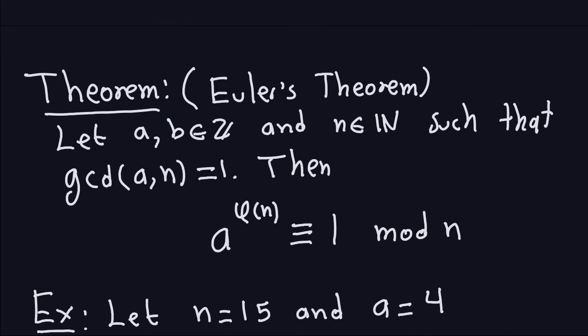Hello and welcome again. This is a continuation of all the properties of number theory that we need for the public key cryptography algorithms that we're going to see later. The first thing we're going to talk about in this video is this important theorem called Euler's theorem. This theorem has to do with congruences and also another important function, the phi function.